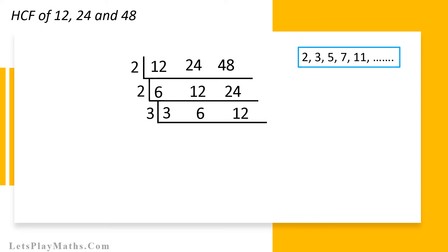Now, let's divide 3, 6 and 12 by number 3 and the result will be 1, 2 and 4 respectively as shown here. Now we have numbers 1, 2 and 4, and they cannot be divided by any prime number.